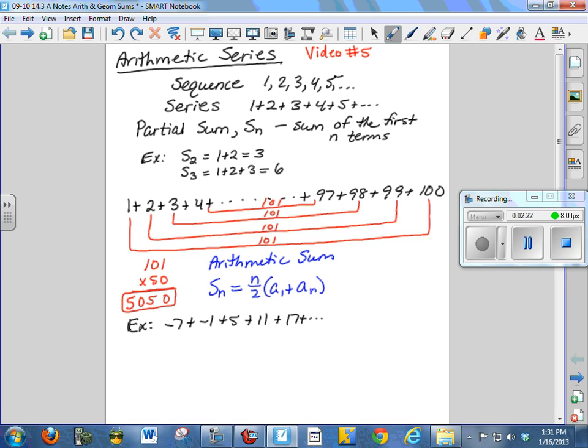So for this particular example, S sub 100 would be 100 divided by 2 times 1 plus 100. And that's how you get the 50 times 101. Only he figured it out just by looking.